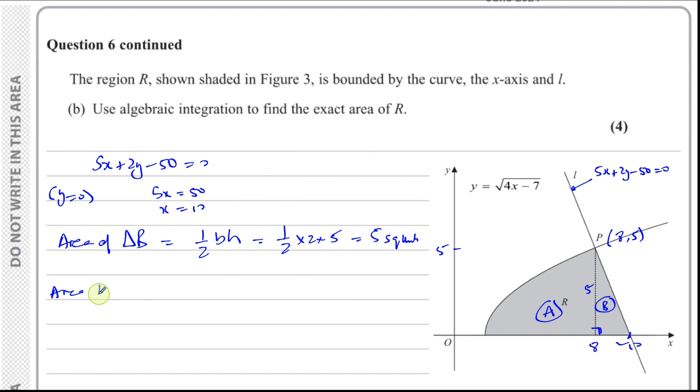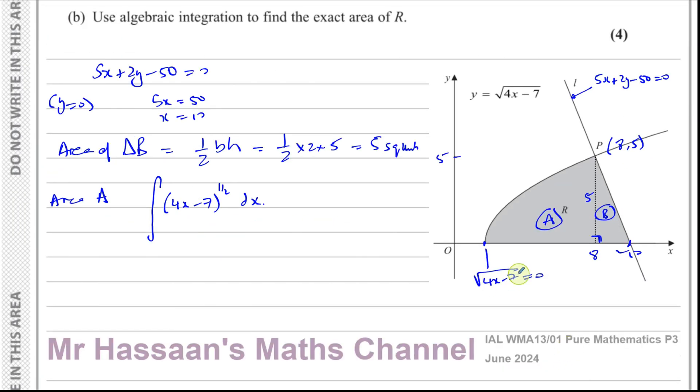As for the area of section A, we have to integrate our function, which was 4x minus 7 to the power of a half, with respect to x. What is this point here? This is when the square root of 4x minus 7 is equal to 0. If you square both sides, you get 4x minus 7 equals 0, so x equals 7 over 4. So we have to integrate from 7 over 4 to 8.